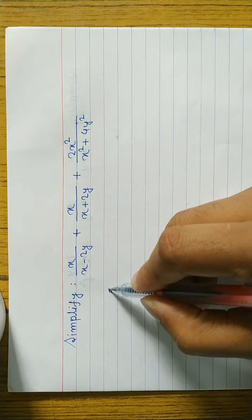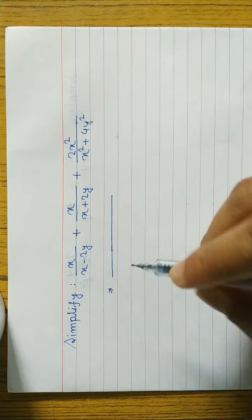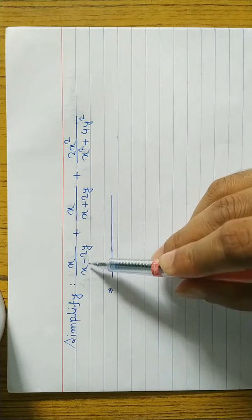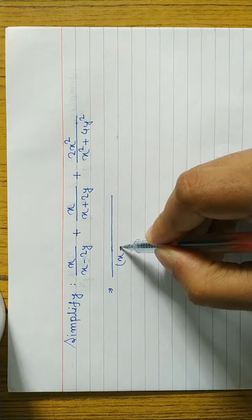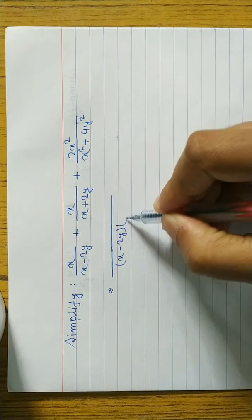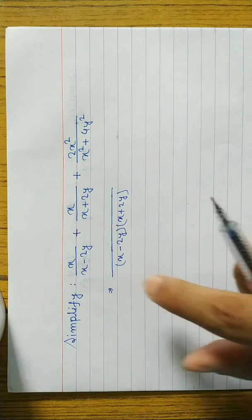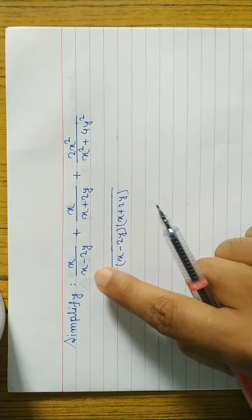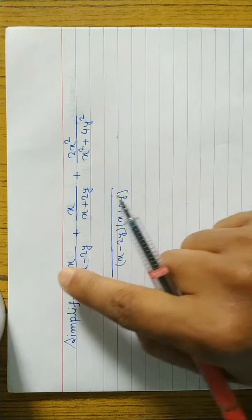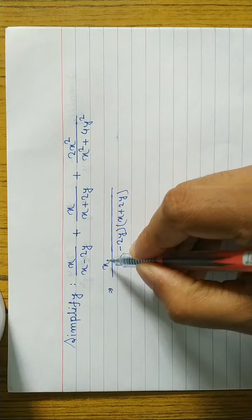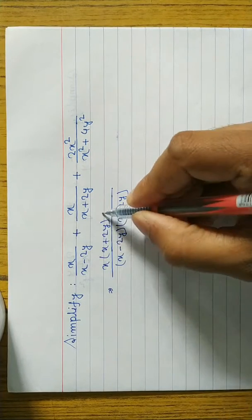While taking the LCM of the first two terms, we take common elements and then the remaining. In the denominator, nothing is common, so we take both remaining elements: x minus 2y and x plus 2y. Then we divide the denominator — x minus 2y cancels, leaving x plus 2y multiplied by x, so we write x(x plus 2y).